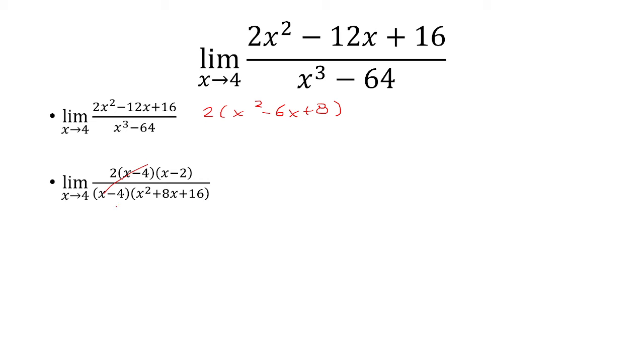The x minus 4s cancel, and now I can plug in x equals 4 to get 1 over 12 as my answer.